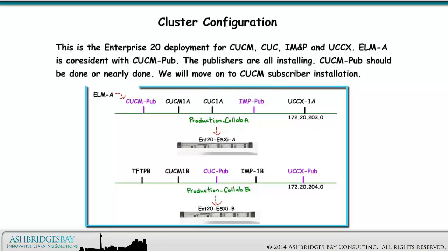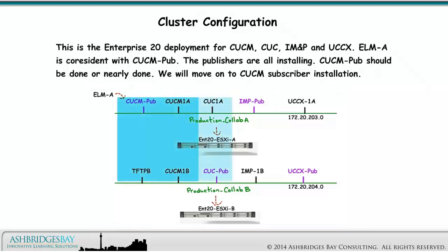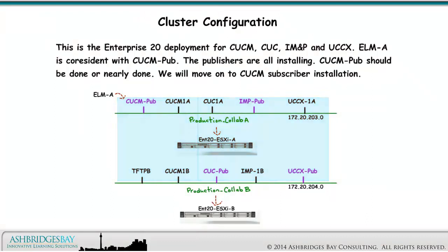This is the Enterprise 20 deployment for CUCM, CUC, IM&P, and UCCX. ELMA is co-resident with CUCM pub. The publishers are installing. CUCM pub should be done or nearly done. We will move on to the CUCM subscriber installation.